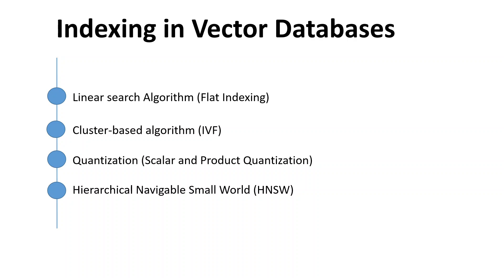There are four common indexing techniques today, and as innovation is happening very rapidly, this might change or increase. The first one is called flat indexing or linear search algorithm. This is a linear search algorithm, meaning it will compare the query vector with every other vector stored in the database. This is quite a simple method and works fine for smaller datasets, but as the dataset grows, it becomes impractical. Large language models typically work on a humongous volume of data.